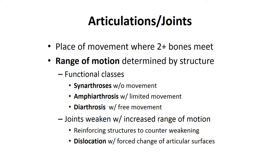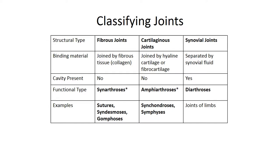Joints will weaken with increased range of motion, and there are reinforcing structures in our joints to counteract this weakening, which we will discuss later. A dislocation is one type of joint injury that may occur when you have a force change at the articulating surfaces of a joint.